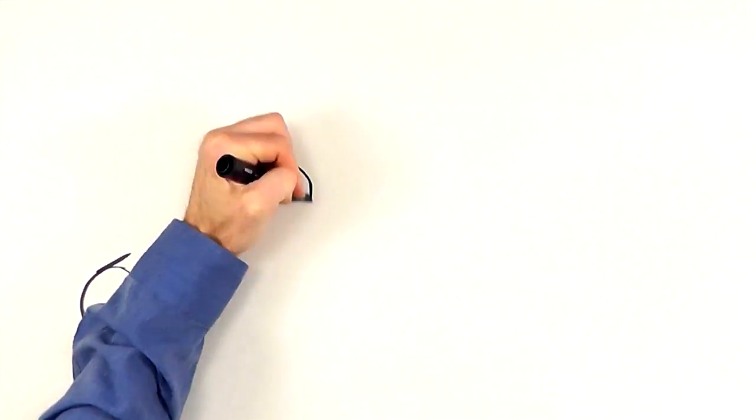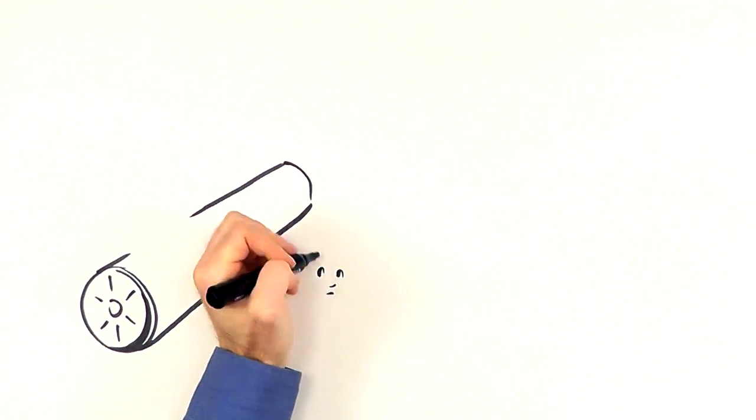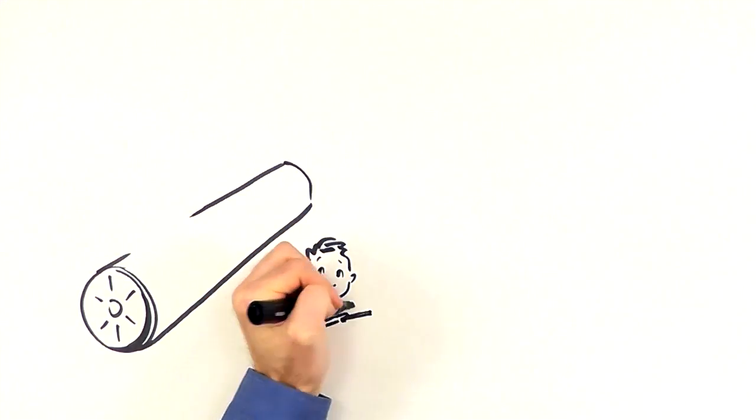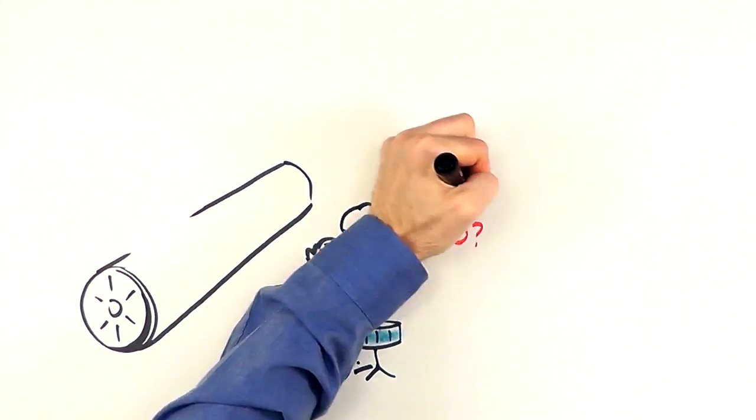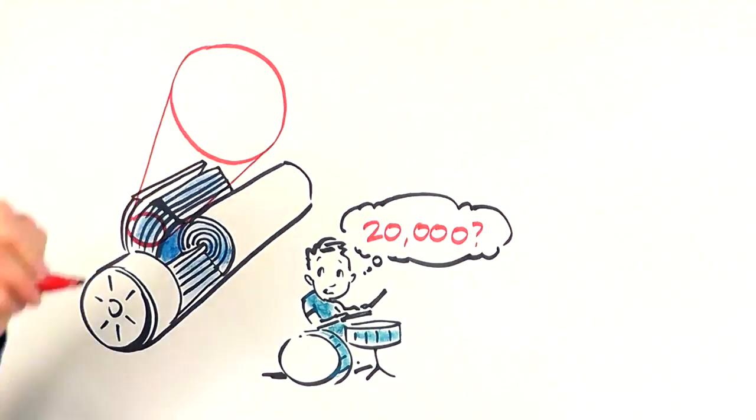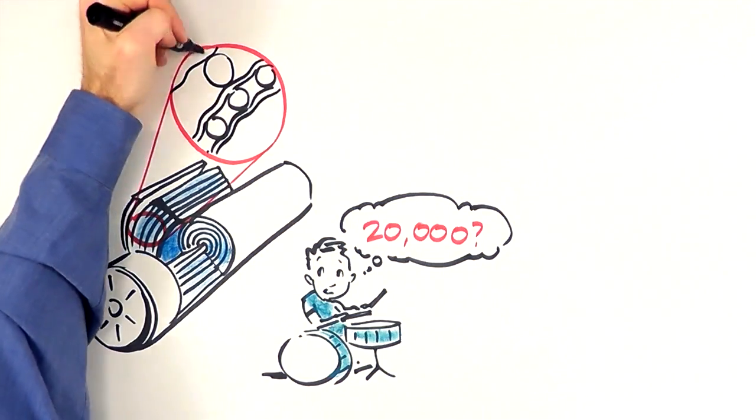Let us see these four foulant removal actions on this RO membrane element. Just by looking at it, you may never have guessed that this very membrane element is actually composed of 20,000 tiny drums. These tiny membrane drums are more easily seen in this cross-section diagram of feed and permeate membrane element channels.